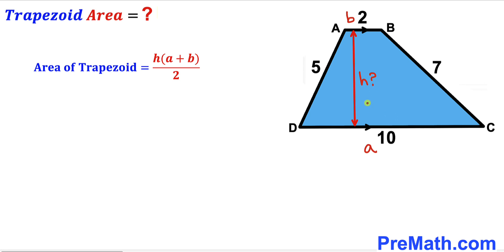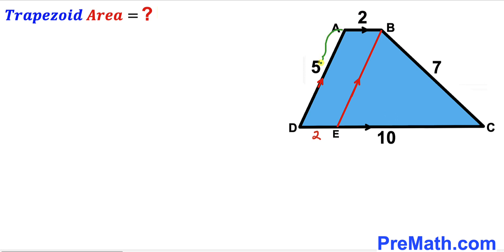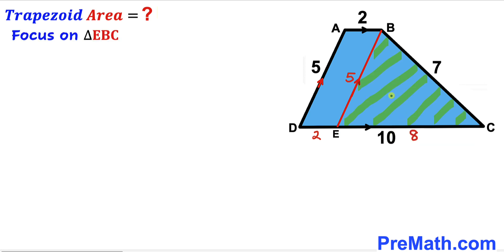Our task is to calculate the height h of this trapezoid. Thinking outside the box, I have constructed a line BE parallel to line AD. Therefore, segment AB equals segment DE — since AB is 2 units, DE is 2 units as well. Furthermore, side AD equals side EB, so EB is 5 units. Since the whole side CD is 10 units and segment DE is 2, the remaining segment EC is 8 units.